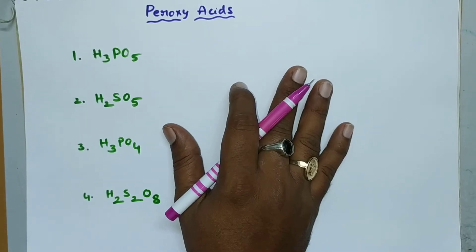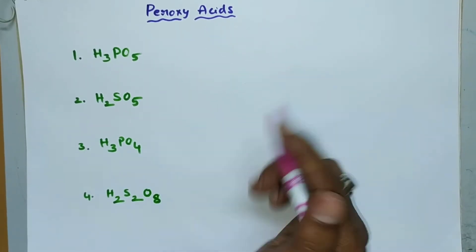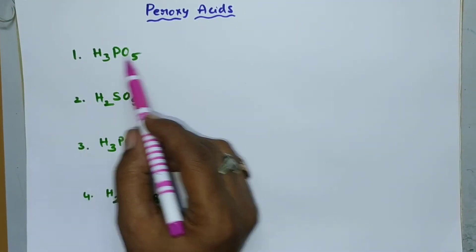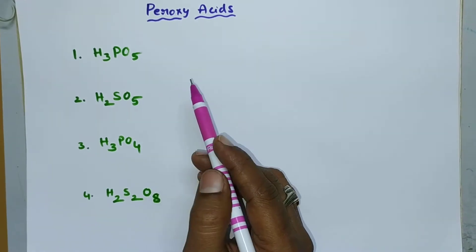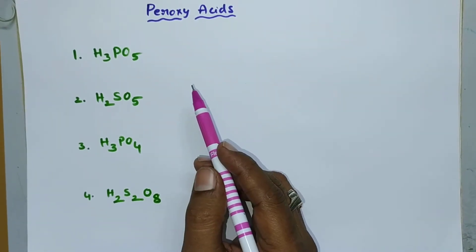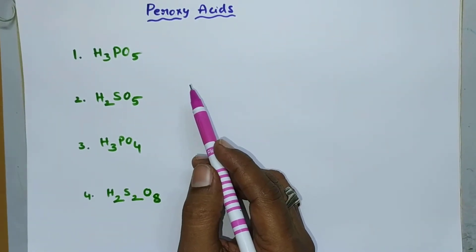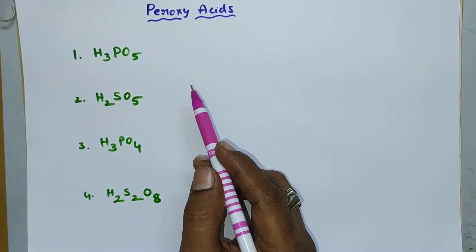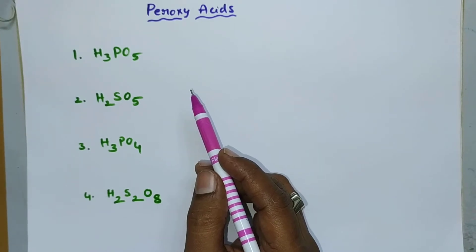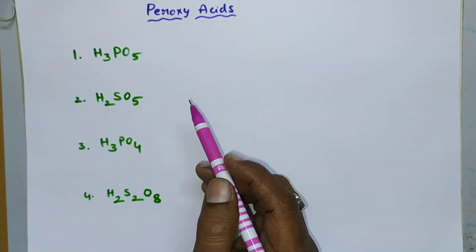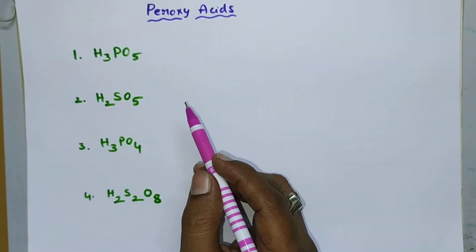Hi students, today in this session we are going to check whether the given acid is a peroxy acid or not. Peroxy acid means it consists of some peroxy bonds.